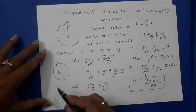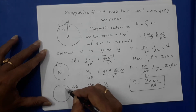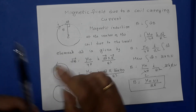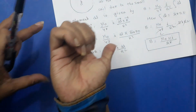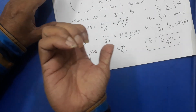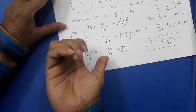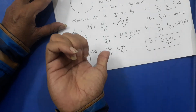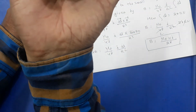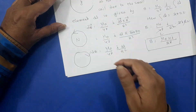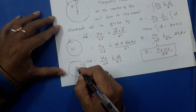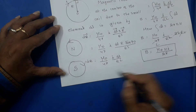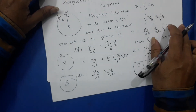Now if the current is in the clockwise direction, the remaining fingers curl showing the direction of flow of current, and the thumb represents the B direction. So B is normal to the page and into the page. This current-carrying loop behaves like a south pole.